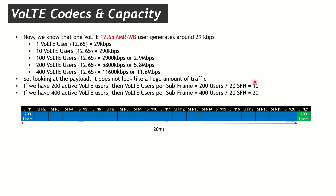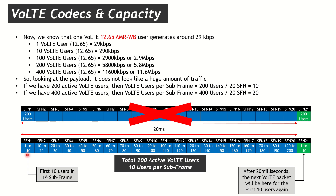With 200 active users and a 20 ms VoLTE period: 200 ÷ 20 = 10 users per subframe. For 400 users, that's 400 ÷ 20 = 20 users per subframe. So for 200 VoLTE users, the first 10 are in subframe 1, the next 10 in subframe 2, and so on — with the cycle repeating every 20 ms. Remember: 200 active VoLTE users means 10 users per subframe.